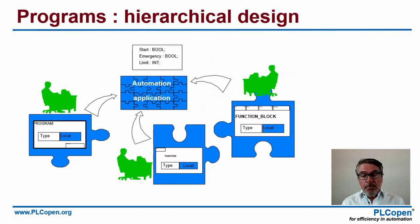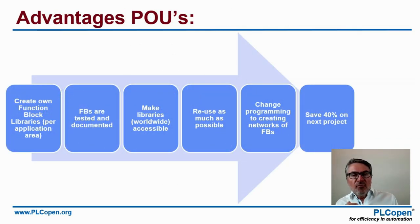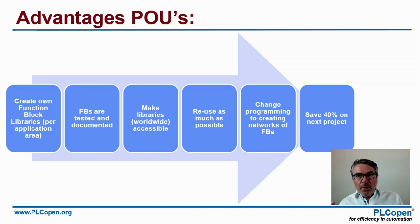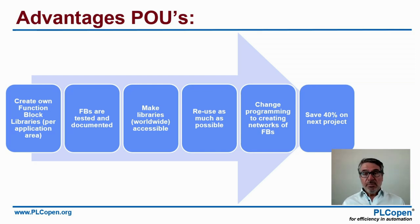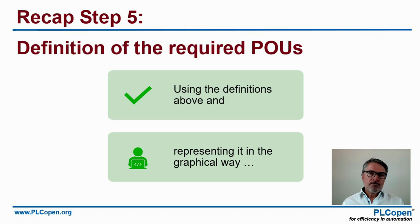With these POUs — functions and function blocks — your application program can look like a jigsaw puzzle of all these predefined functionalities, making your program much smaller and more controllable. You create your own function block libraries: they're highly reusable, tested, and documented, and accessible worldwide. Reuse them as much as possible. This can save you easily 40% on your next project — I have seen values of 60% and even higher, depending on how well you define your function blocks.